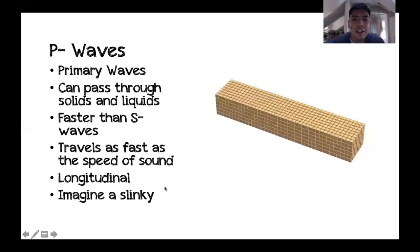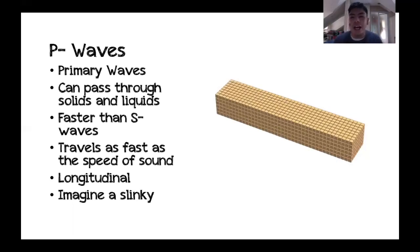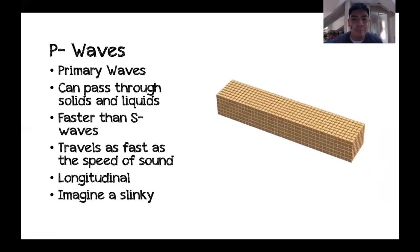P waves — or primary waves — are the first waves detected by seismograph stations across the world. They can pass through solids and liquids and are faster than S waves, traveling as fast as the speed of sound. Their direction of movement is longitudinal — imagine a slinky to visualize how they move.